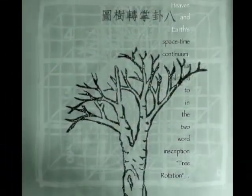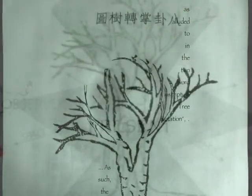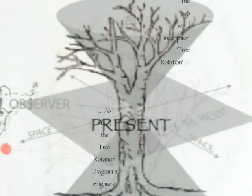In this capacity, the trigram's simple horizontal and vertical geometry may be conceived as a linear grid within the greater axial and orbital dimensions of Heaven and Earth's space-time continuum, as alluded to in the two-word inscription, tree rotation.